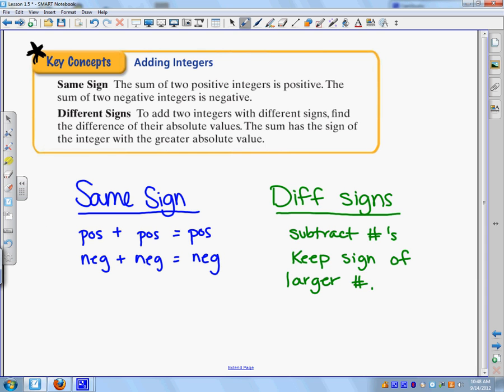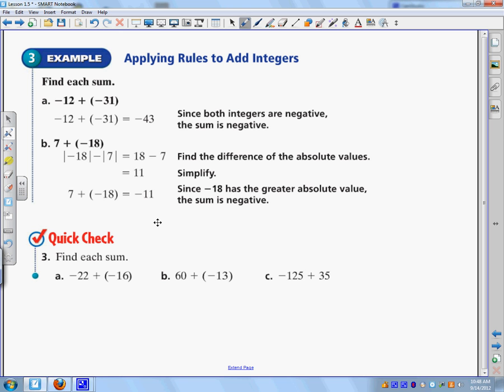So here is an example. These both, negative 12 plus negative 31, are both negatives. So two negatives make a negative. So you just add the two numbers together to get negative 43. Now these are different. So seven plus 18, what you do is you end up subtracting the two numbers to get 11 right here. But then you look, seven and 18. 18 is the larger number, and it's negative. So I keep the negative sign, and it becomes negative 11. So try these three problems, and then come back, and we'll go over. Push pause.